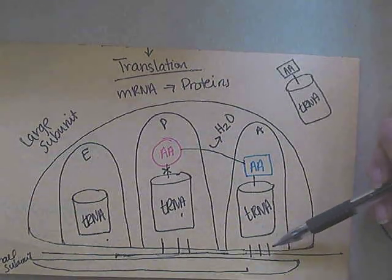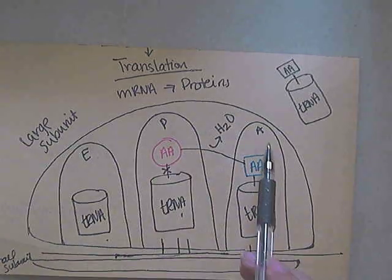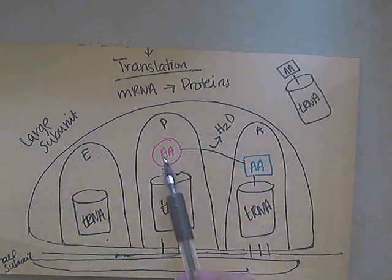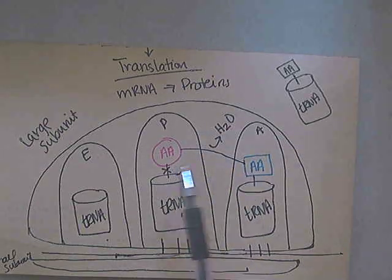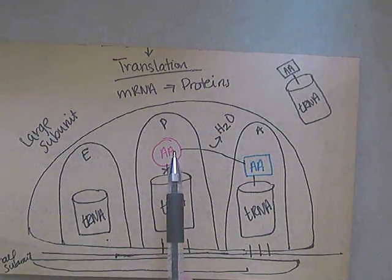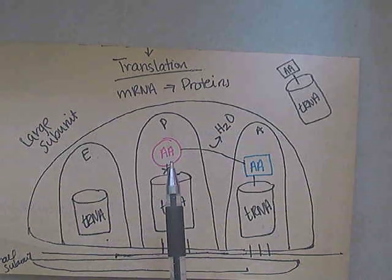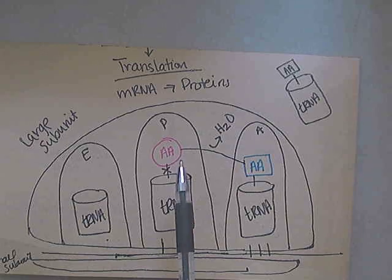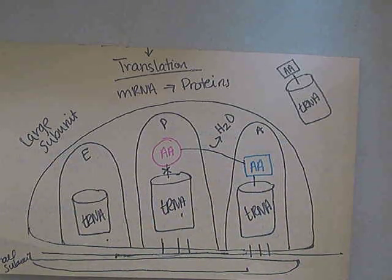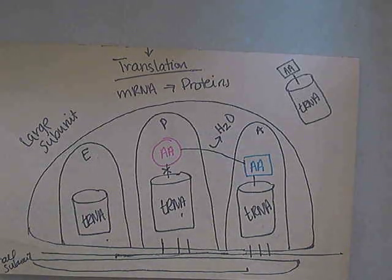The stop codon itself doesn't code for an amino acid. Instead, it causes the whole process to dissociate. As the amino acid chain grows through dehydration synthesis forming those peptide bonds, the protein begins to fold in on itself. Your primary sequence is that amino acid sequence, but then it starts to form an alpha helix, a beta pleat, and pockets with hydrophobic interactions. Once the entire polypeptide has formed, it can join with other polypeptides to form the functional protein — whether it's an enzyme, an antibody, or structural.